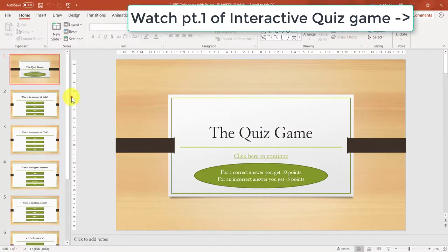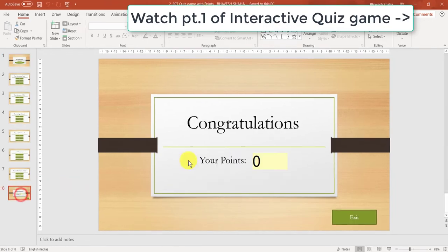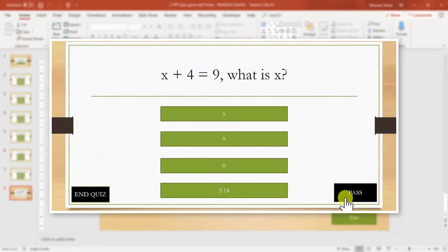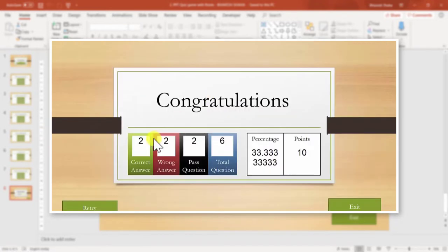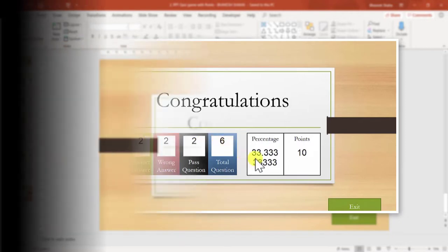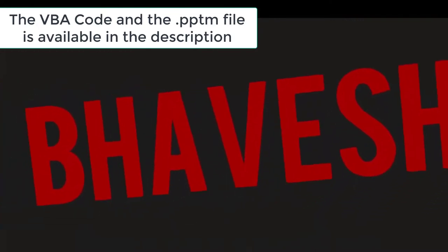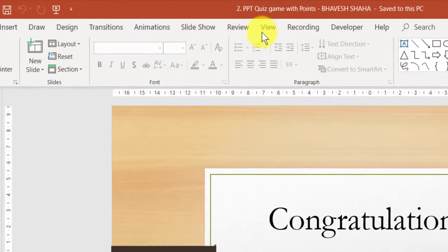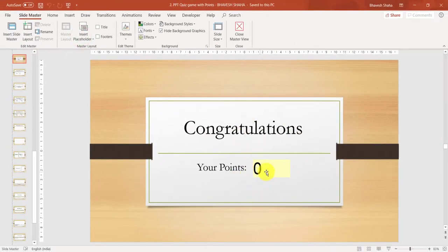In the last video I showed you how to make a quiz game which has six questions and something which calculates the points at the end. In this video I will be showing you how to add the number of correct answers, wrong answers, total questions, past questions, points, and percentages. Go to View and click on Slide Master so that we can edit this slide.